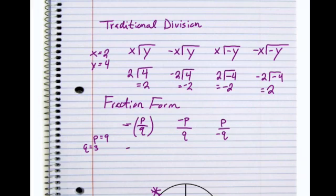The negative on the outside of my 9 over 3... well, 9 over 3 is 3, and the opposite of 3 is negative 3.